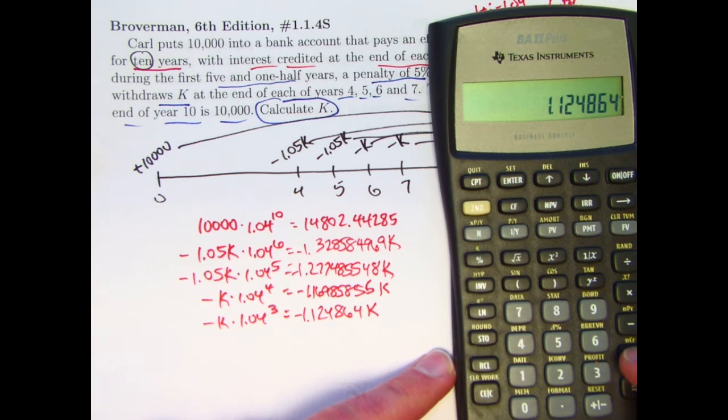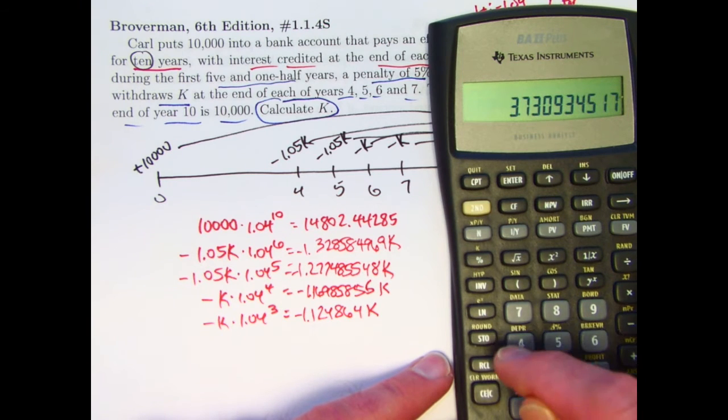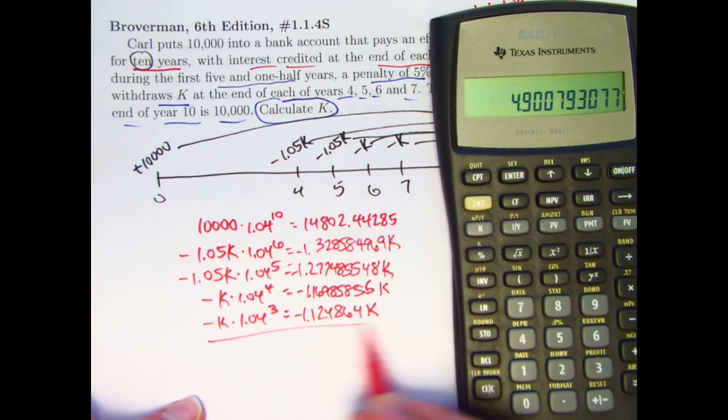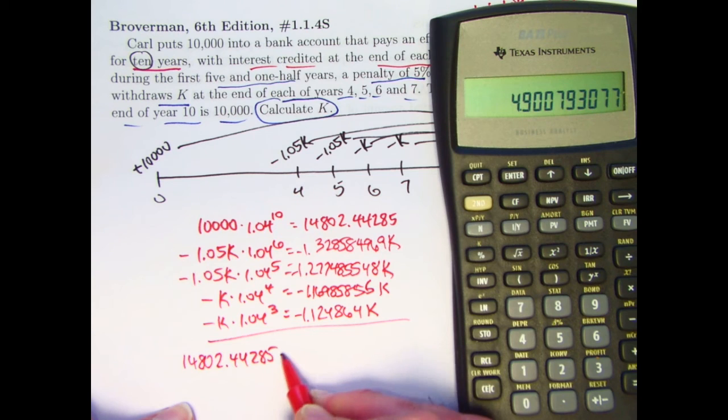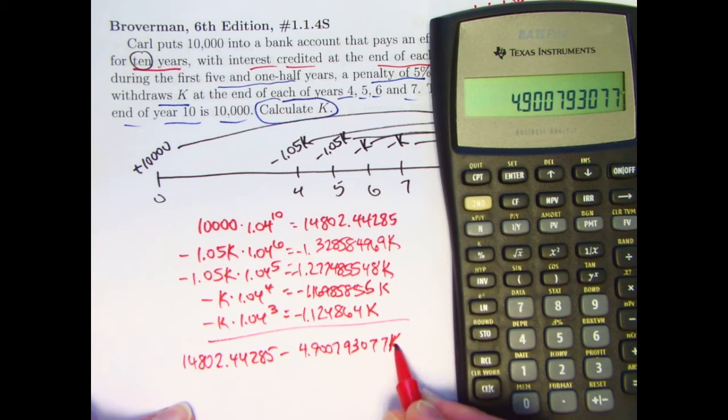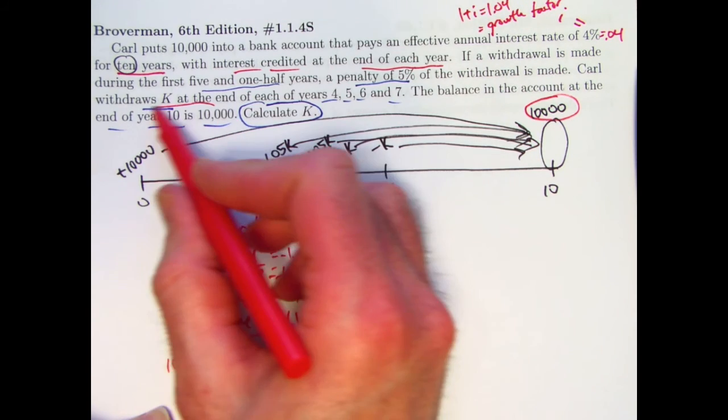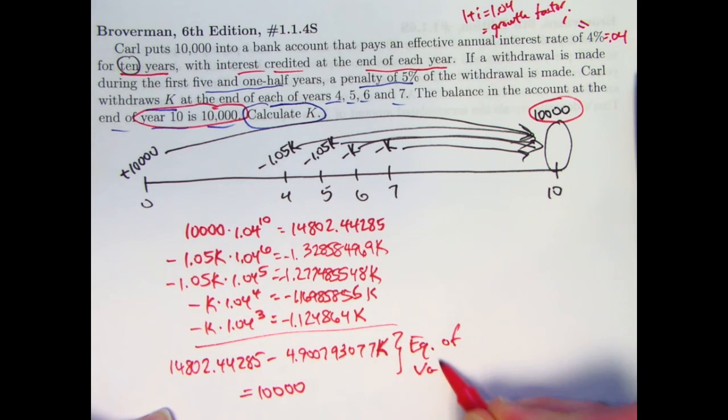I don't need to bother storing that one because now I can just add on what's stored in the other registers except for the one that was in register zero, which is this one. Let's see, so I want to add on register one, so I press RCL one. Add on what was in register two, RCL two. Add on what was in register three, RCL three. All right, there we go. What we have here then, if we combine all these, is 14,802.44285 minus 4.900793077K. That must equal the final value at time 10, which was 10,000, up here coming from this. There is your equation of value that we can algebraically solve for K.